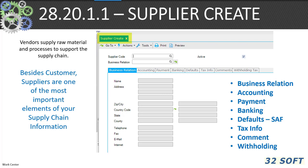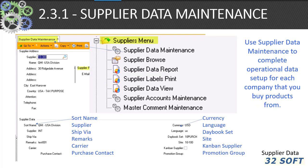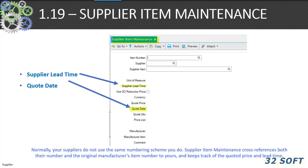Here we see the 28.20.1.1 supplier create. Besides customers, suppliers are one of the most important elements of your supply chain information. The 2.3.1 is the older version of supplier maintenance in SE, still required for operational setup so that operations can interface correctly with the EE side of QAD. In 1.19 supplier item maintenance, as the COVID disruption became more pronounced in 2021, the use of 1.19 became a more and more critical aspect of your relationship with your suppliers.